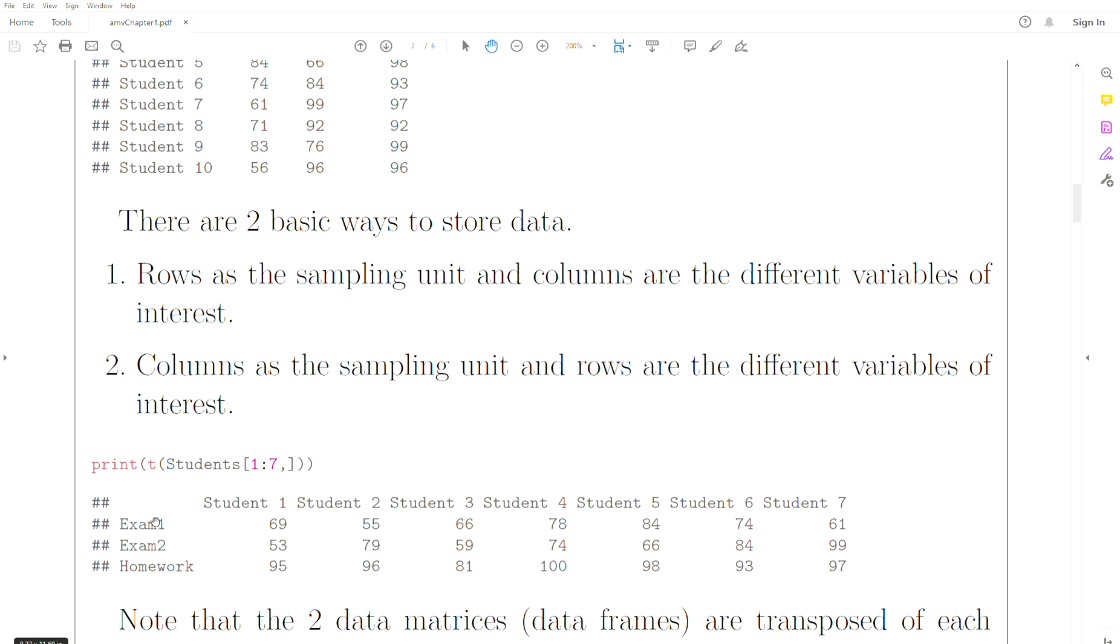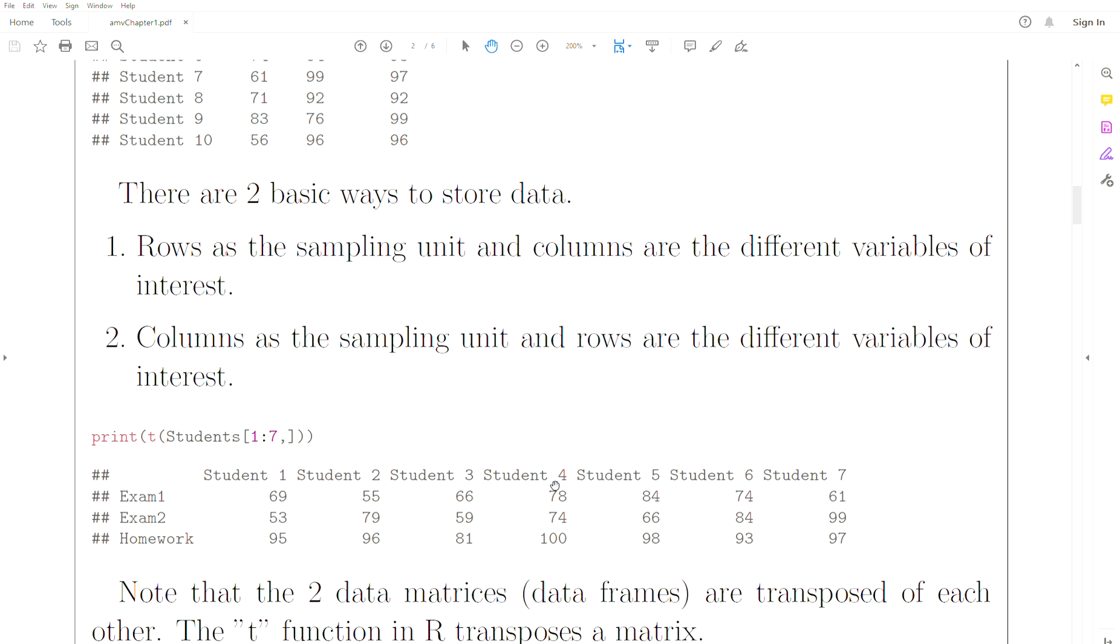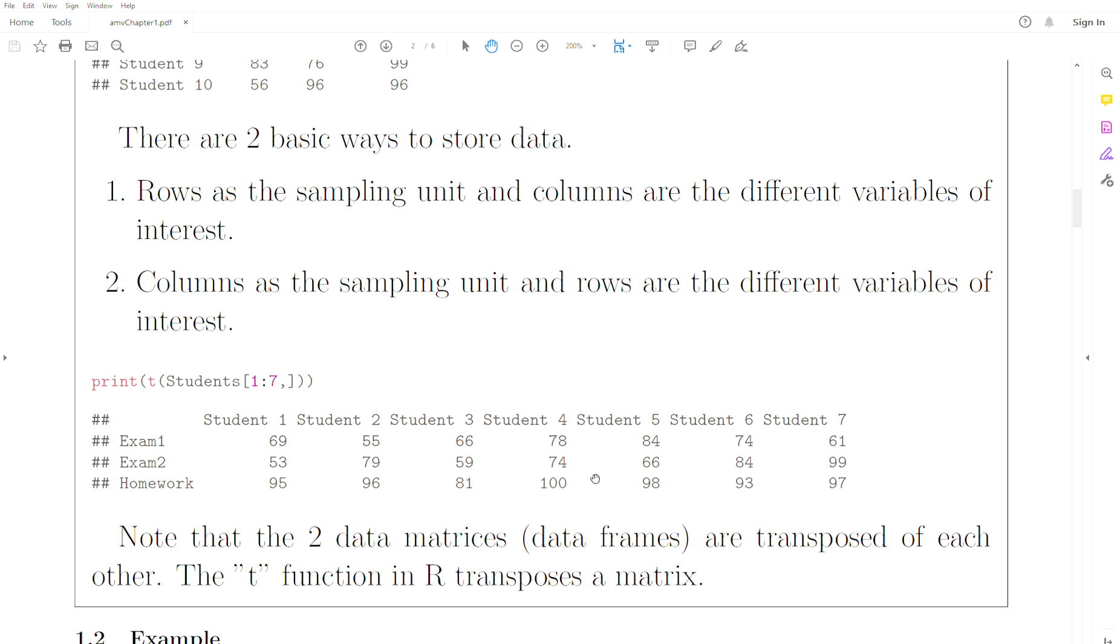And the rows be the variables of interest: exam one, exam two, homework, et cetera. And stored like this. Now these data matrices or data frames are really what's called the transpose of each other. And that's this T function in R, which we'll cover in detail later.